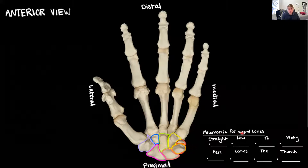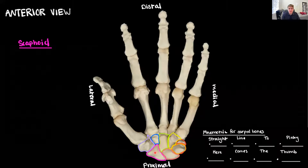We're going to go through the carpal bones using a mnemonic: 'Straight line to pinky, here comes the thumb.' We'll start here, go in a straight line toward the pinky, then over to the thumb. Starting with the first bone, the scaphoid, highlighted in purple. The scaphoid is actually the most commonly broken bone — many people break it snowboarding when they fall forward onto their wrists. After the scaphoid comes the lunate, which gets its name from its shape — it looks like a crescent moon.